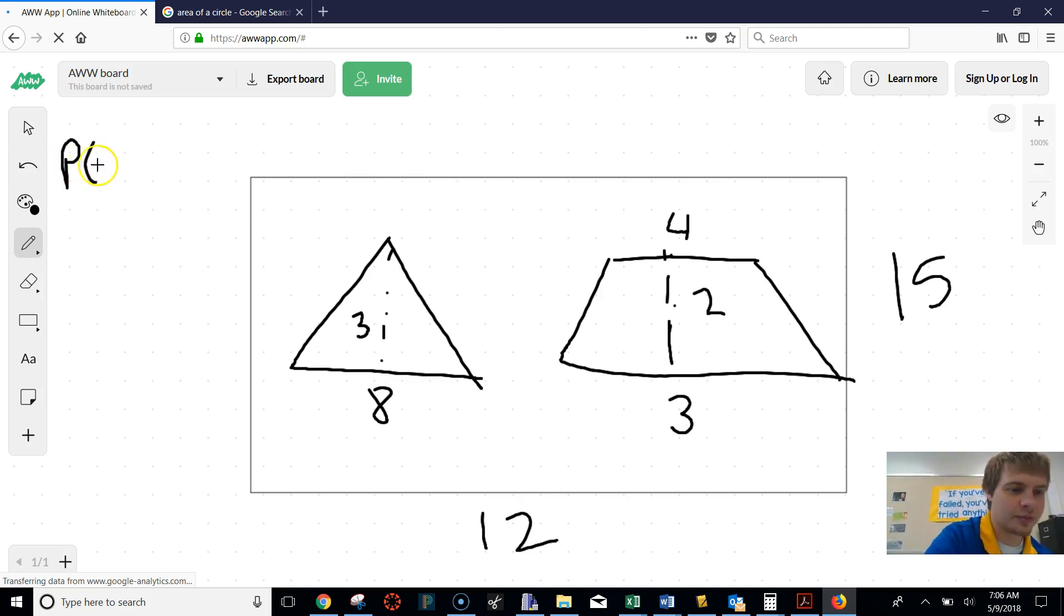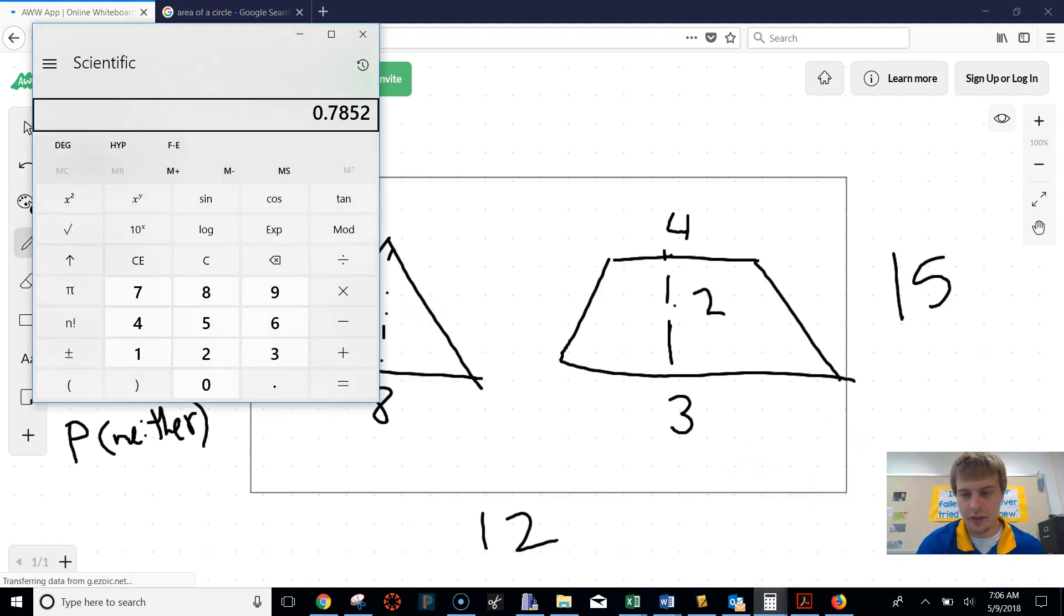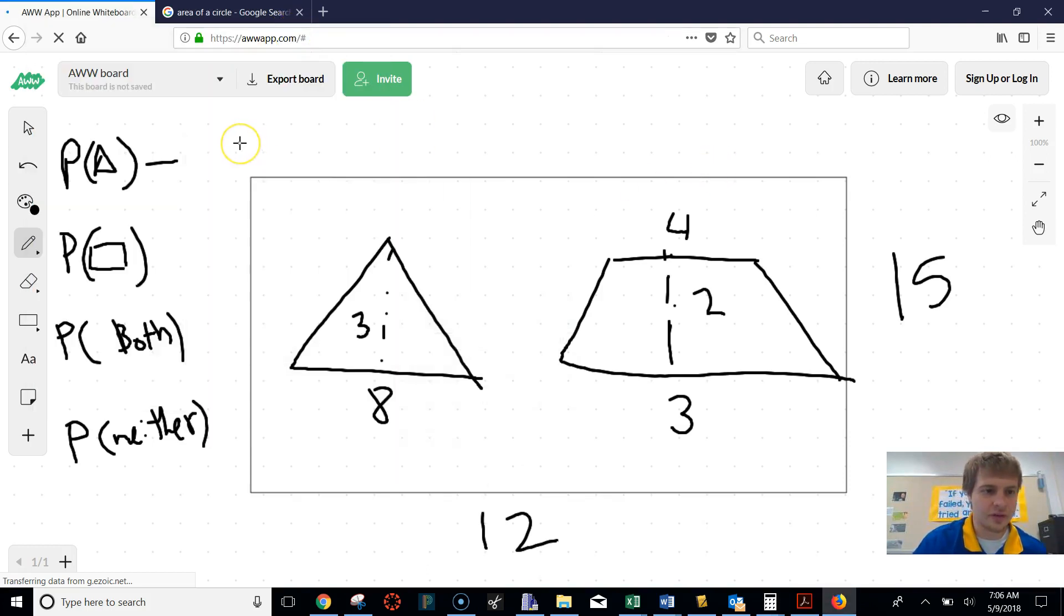So we're going to find the probabilities of some things. So the first one we're going to find is the probability that we hit a triangle. Then we're going to find the probability that we hit that trapezoid. And then we're going to find the probability that we hit both. And then we're going to find the probability that we hit neither. And again, we're going to find the probability that we hit the triangle, which you always do probabilities by doing your total over that individual success spot. So we have to find our total, which that would be 12 times 15, which is 180. So our total for all of these things are going to be 180.